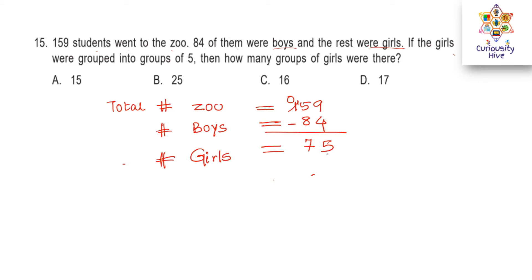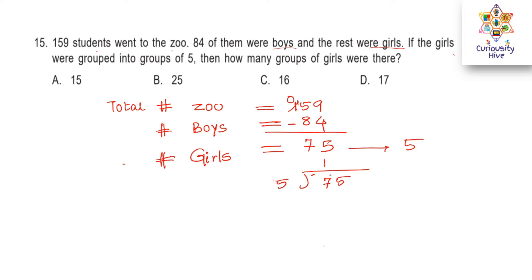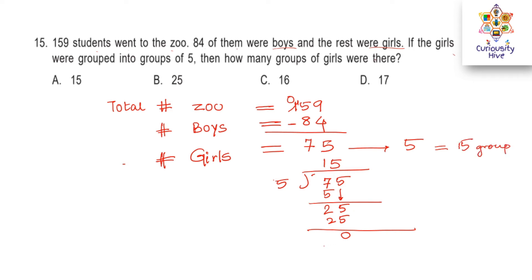These 75 girls were made into groups of 5. So how many groups would that be? 75 divided by 5: 5 times 1 is 5, leaving 2, then 5 comes down. 5 times 5 is 25 with remainder 0. So 75 divided into groups of 5 gives 15 groups in all. The answer is option A, 15 groups.